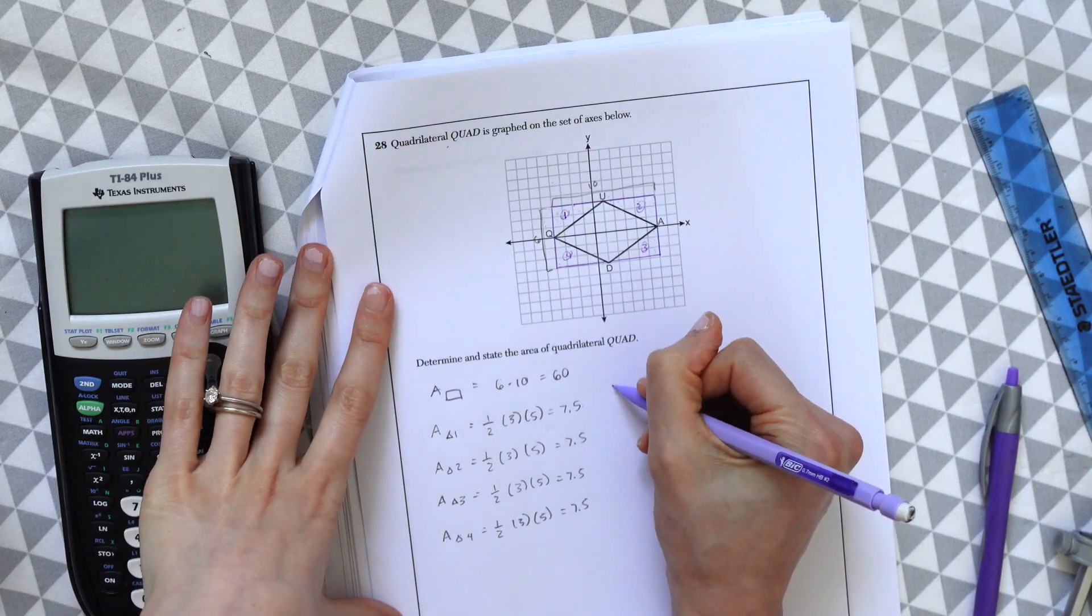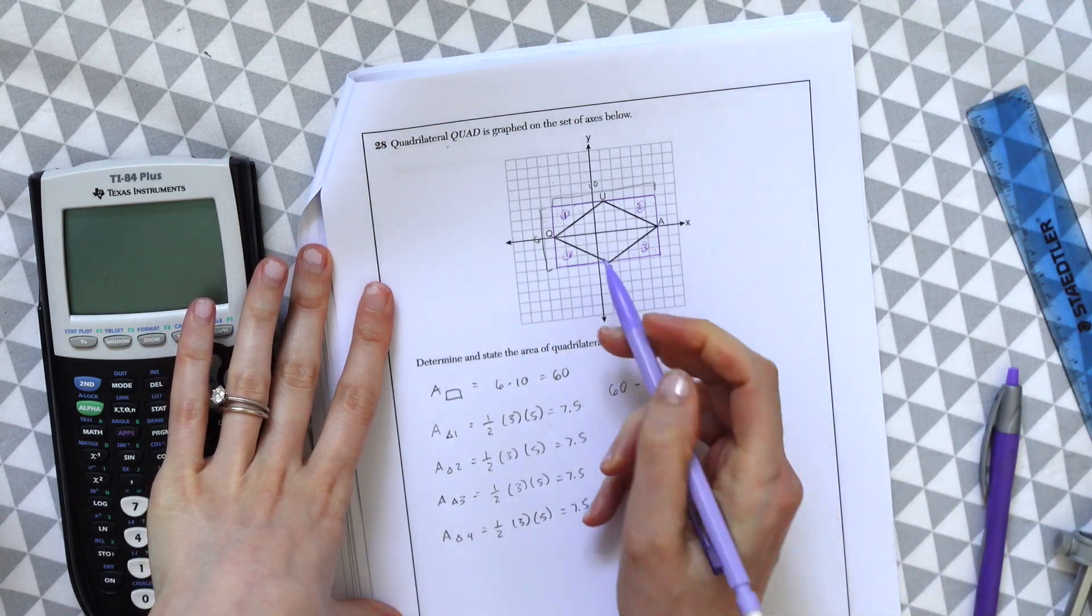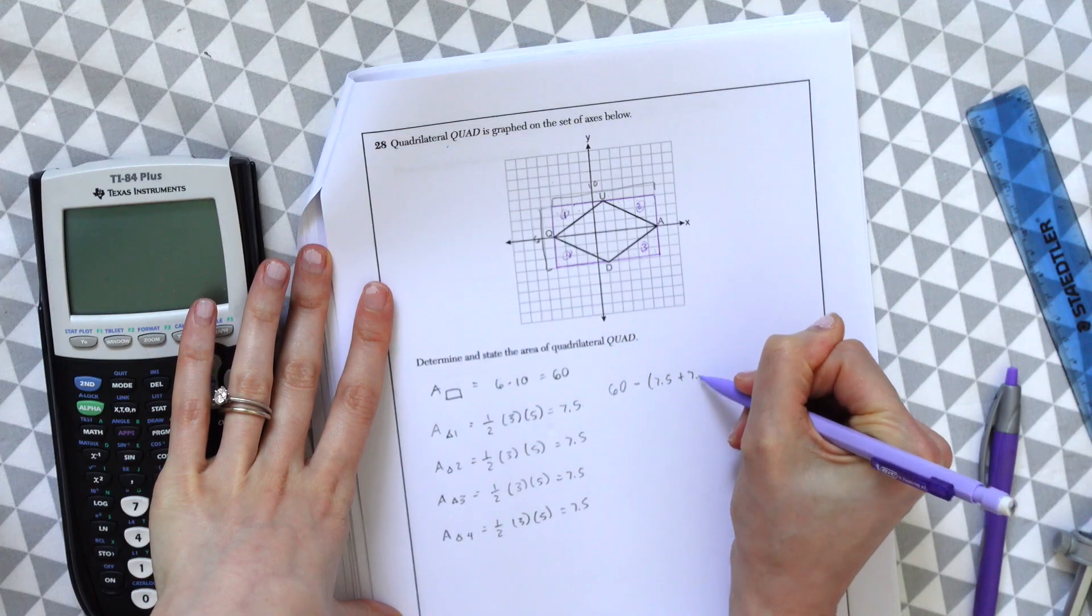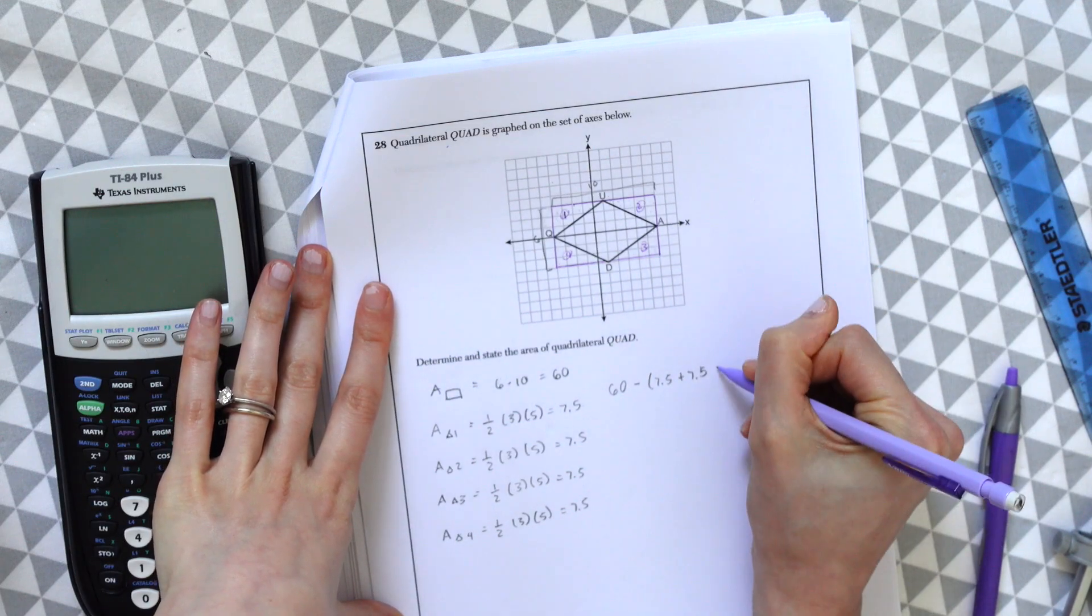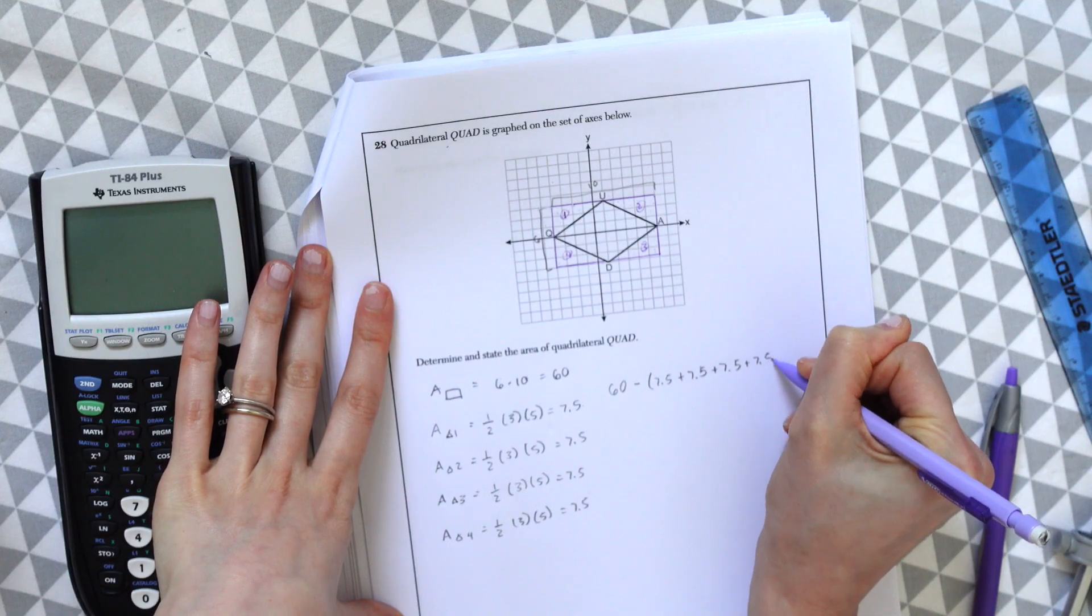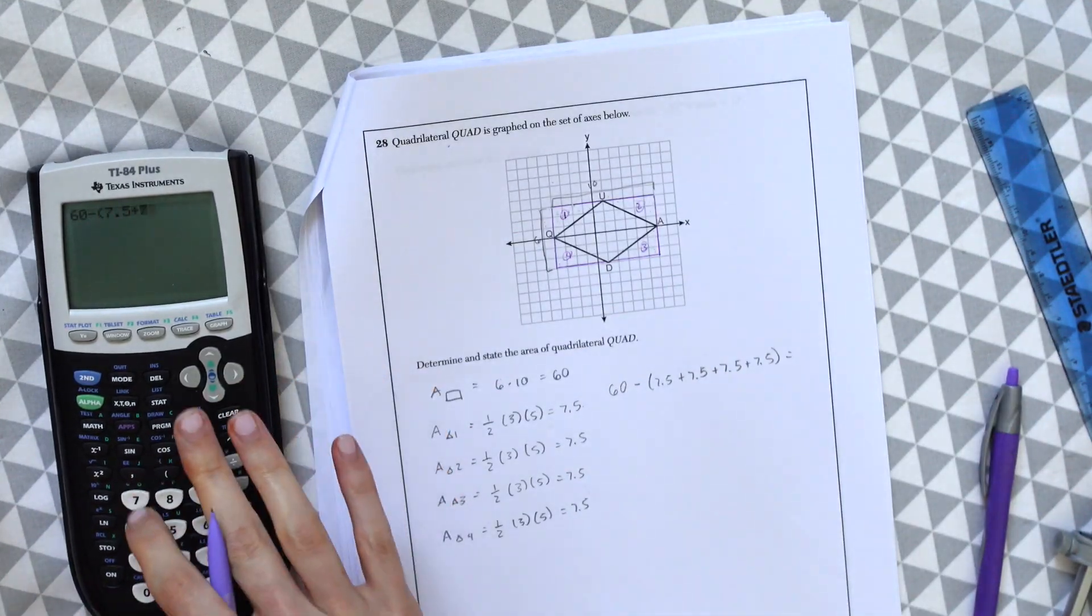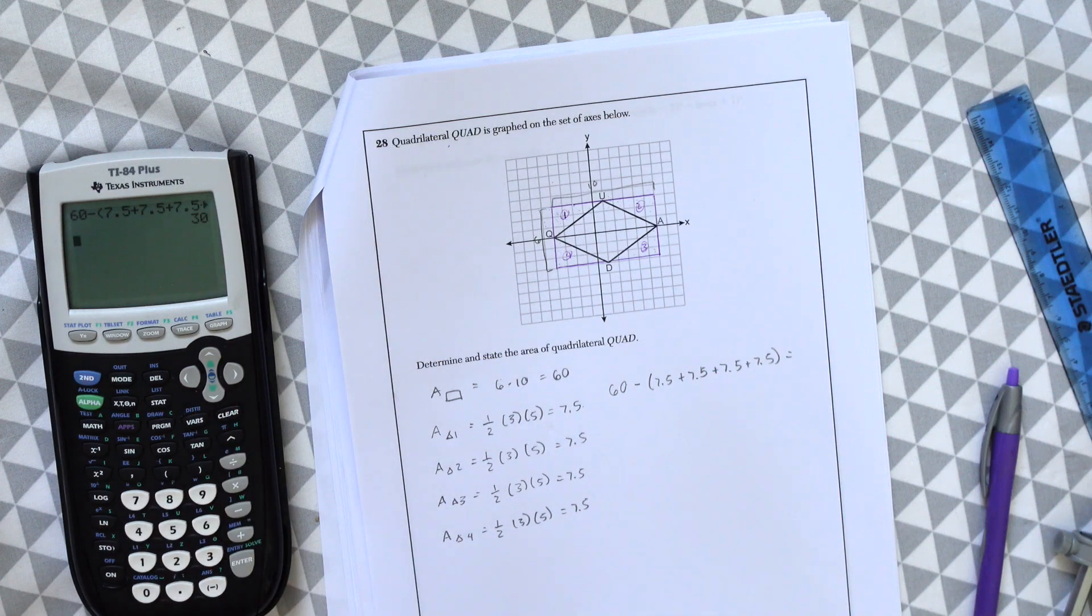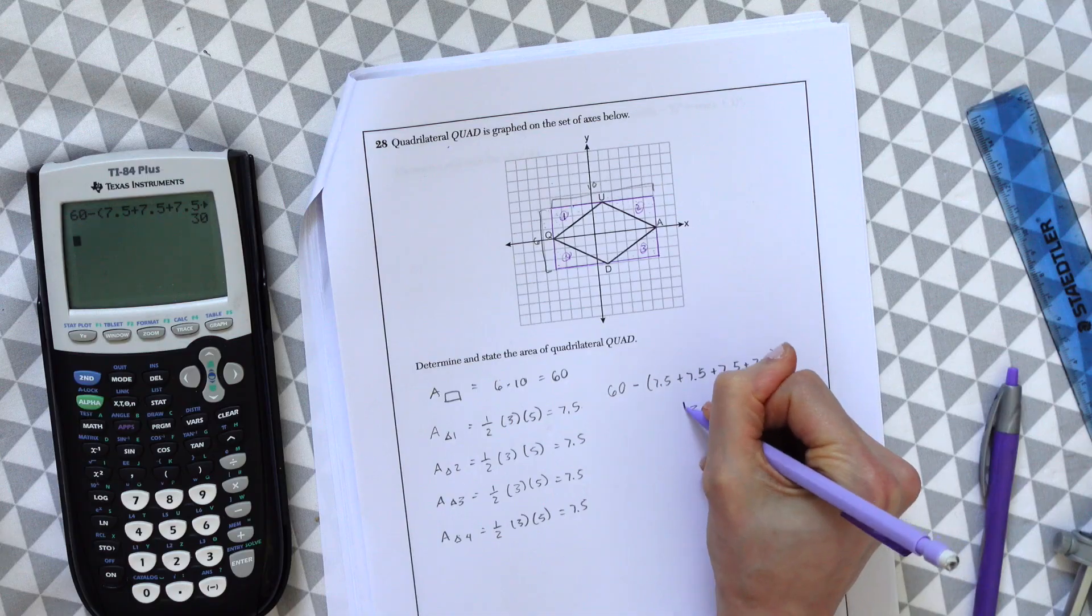So we found the area of each triangle and the area of the rectangle. So now we're just going to take our whole 60 and then subtract out 7.5 four times representing each triangle, and we get 30, which is our answer.